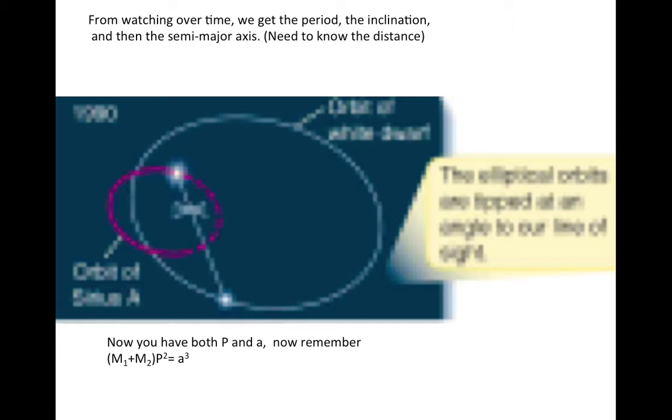Once you have P and a, you can now use the version of Kepler's third law that we looked at before and you get the sum of the masses. From the relative size of the orbits, you then get the ratio of the masses. If you've got them both, you've got everything.